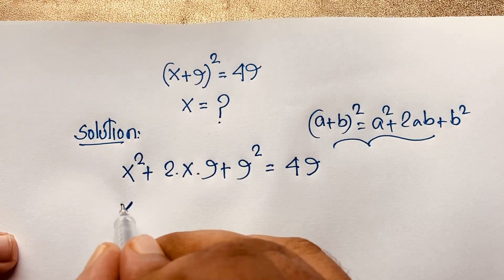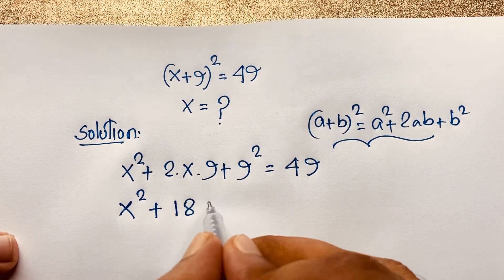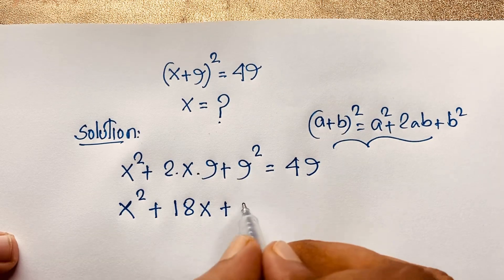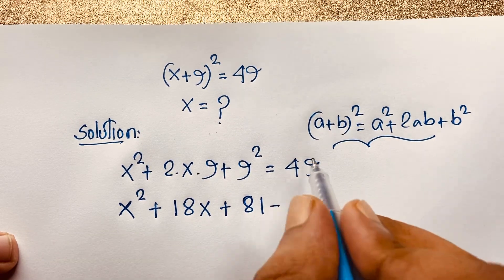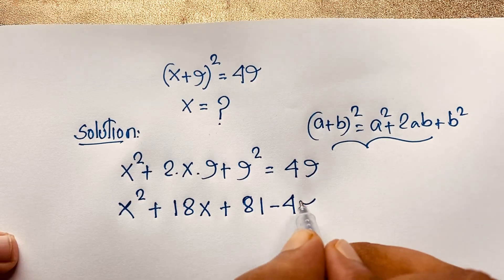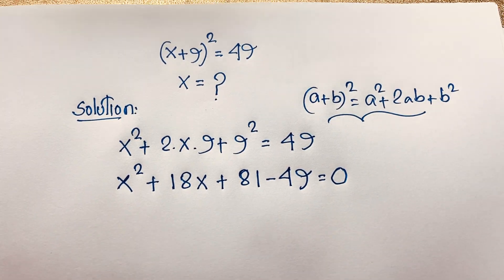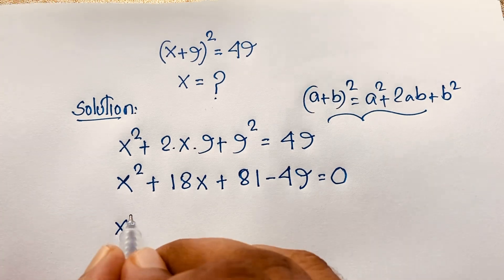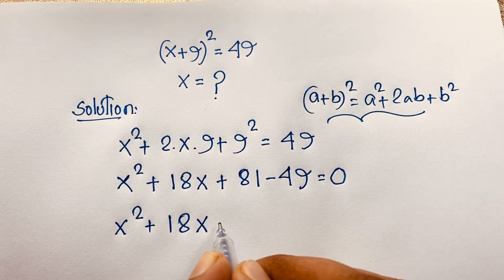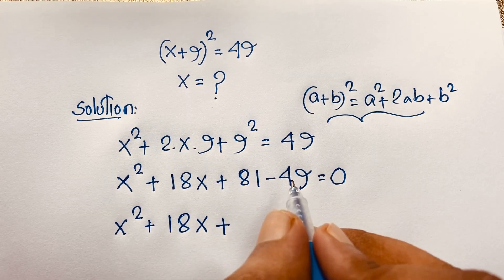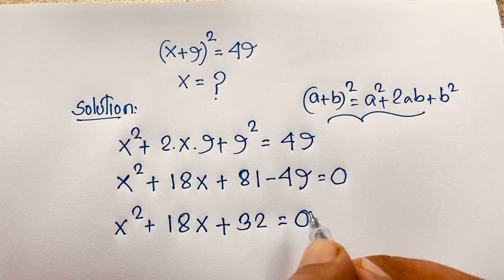Then it will be x squared plus 2 times 9, which is 18x, plus 9 to the power of 2, which is 81, is equal to 49. And if I move 49 to this side, it will be positive 49 equal to 0. So we get x squared plus 18x, then 81 minus 49, which is 32, is equal to 0.